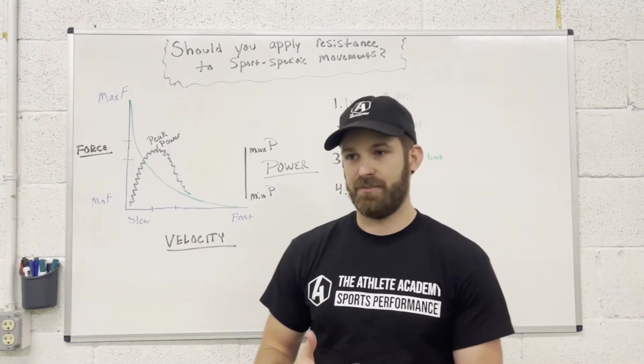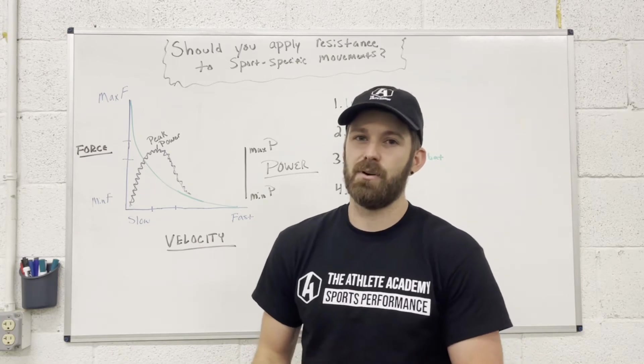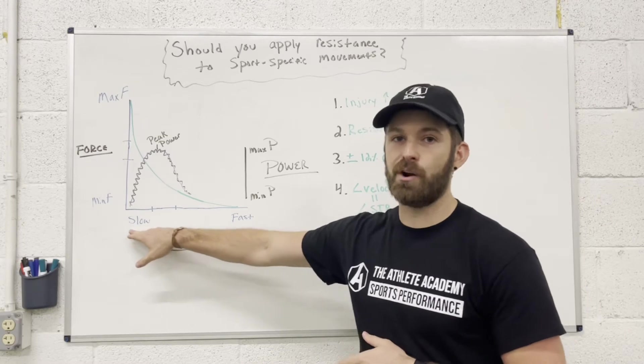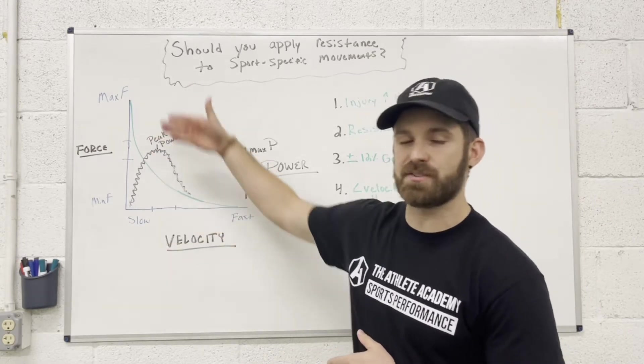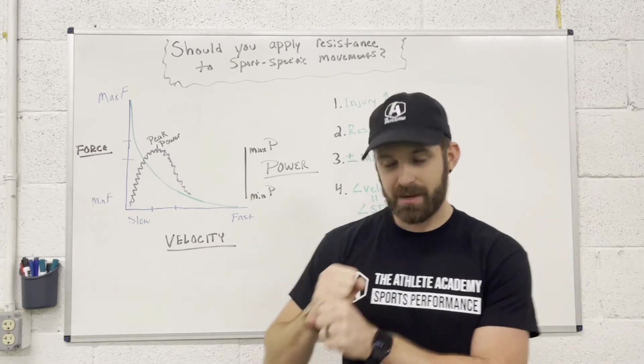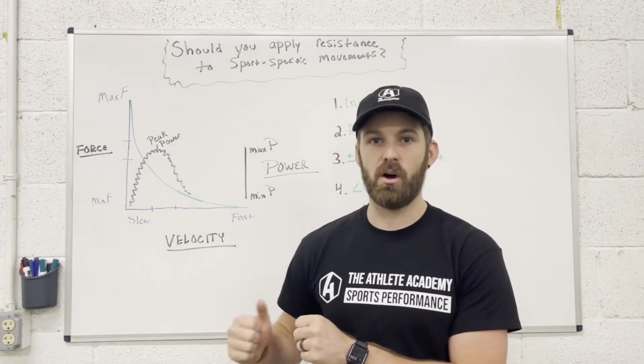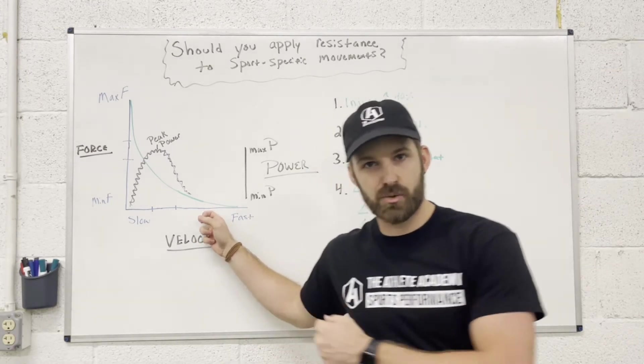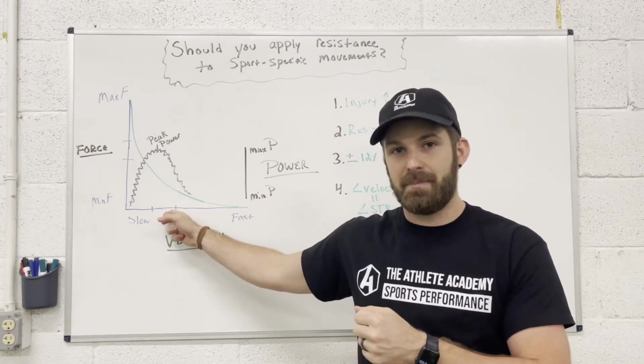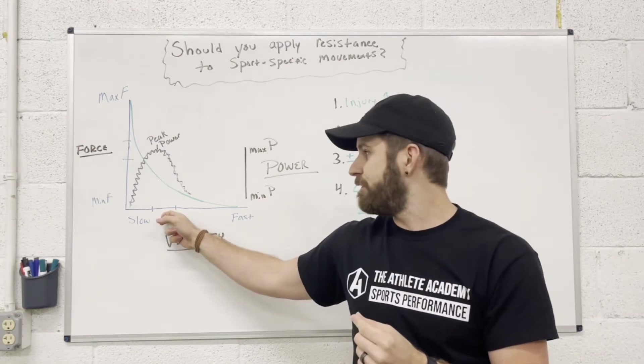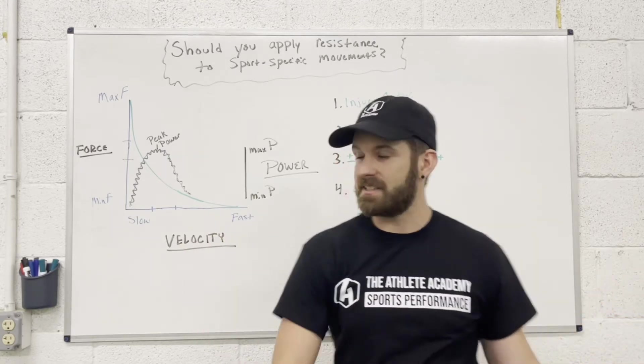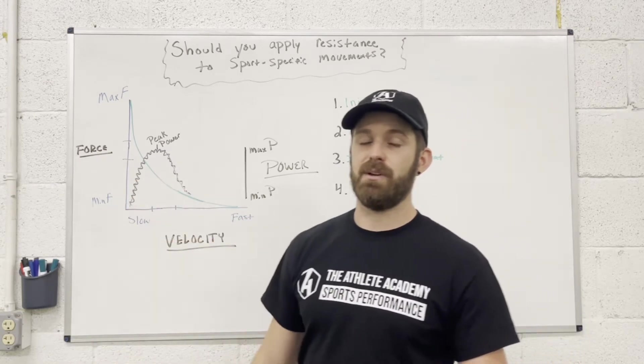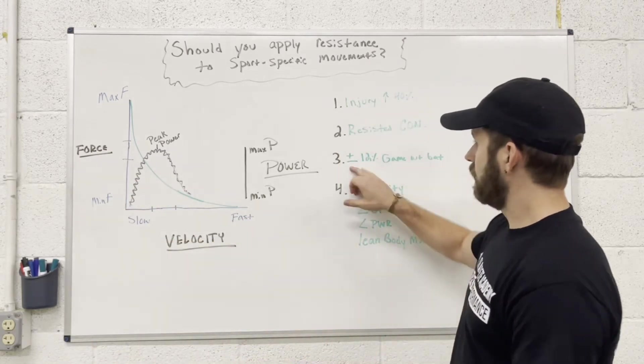So theoretically, if we resist that concentric movement, we're going to become more powerful. The big issues with bands is that we don't know where we're at on this power curve. We don't know where we're at on the force velocity curve. When we start off with the band, when we're here with the bat and haven't created the movement, there's not any band tension at all, or maybe very little. So we're over here on this side of the power curve. And then when we start to swing, we started to travel this way and maybe we hit peak power for a millisecond, but when we finish that movement and that band's in full resistant tension, we're over here on this side creating a slow movement. So we could in fact, we could be making our swing actually a lot slower.